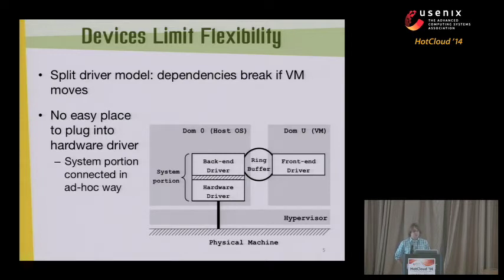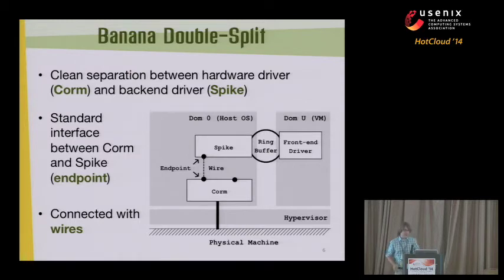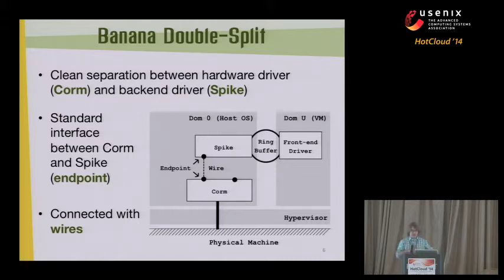What we're proposing is to take the split driver model - which is only partially decoupled - and split it again to make it more decoupled. That's where the name comes from: the banana double split driver model. We take that system portion of the device driver interaction model and make a very clean separation between the hardware driver, which we're calling the QORM, and the back-end driver, which we're calling the spike. The important thing is that there's a standard, well-defined interface between the spike and QORM, and the two things can be connected with wires and rewired, reconfigured in a software-defined manner.